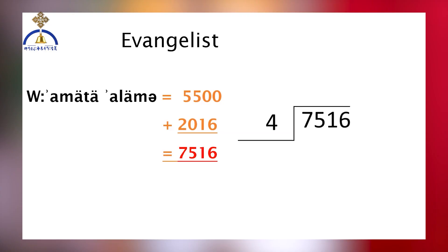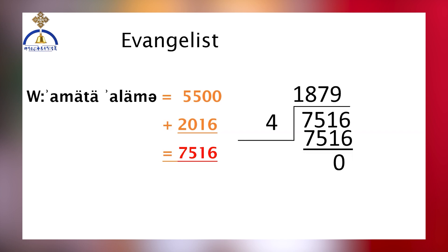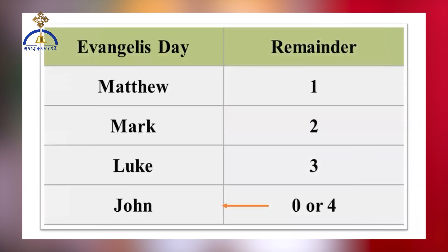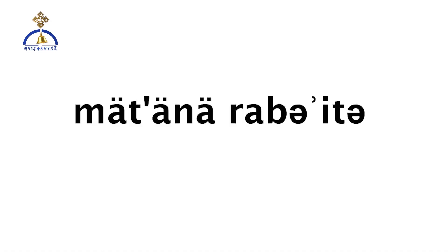Next, the year of the world is divided by four, since there are four evangelists and their names repeat every four years. When 7,516 is divided by four, the result is 1,879 with no remainder. The remainder is crucial in determining the evangelist of the year. If the remainder is zero, it corresponds to the year of John. If the remainder is two, the evangelist for that year is Mark, and so on, as illustrated in the provided chart. The quotient obtained by dividing by four is also important and known as Med'an Arabit, which will be used later for another calculation.